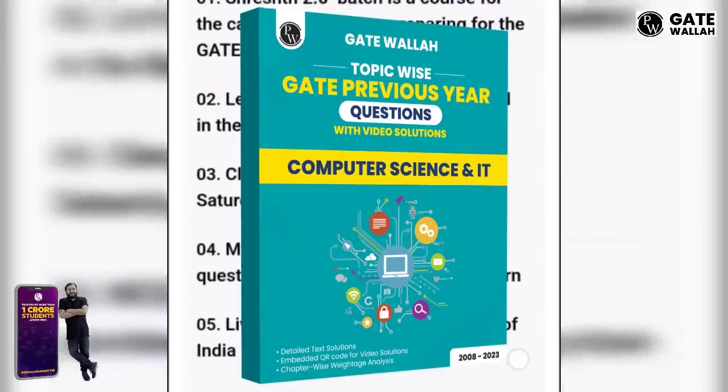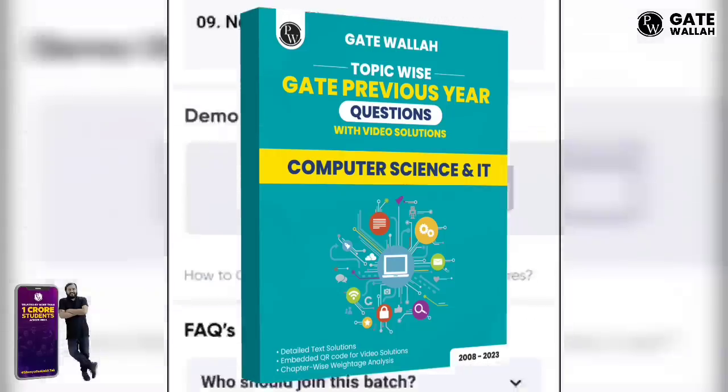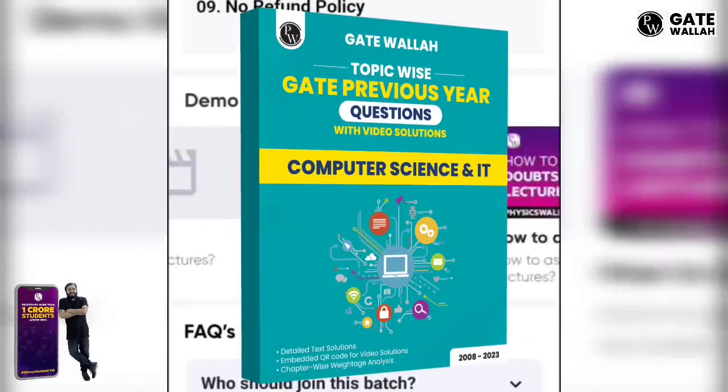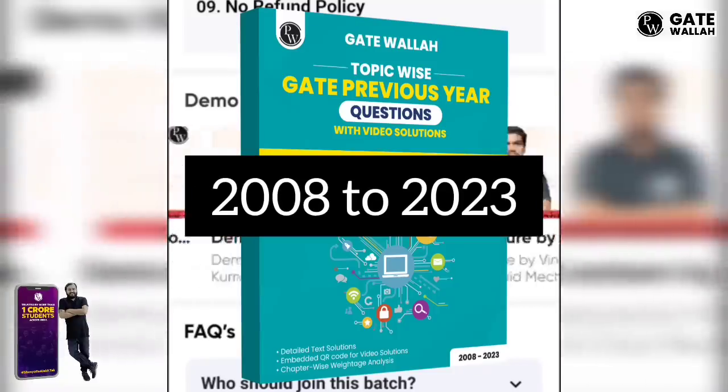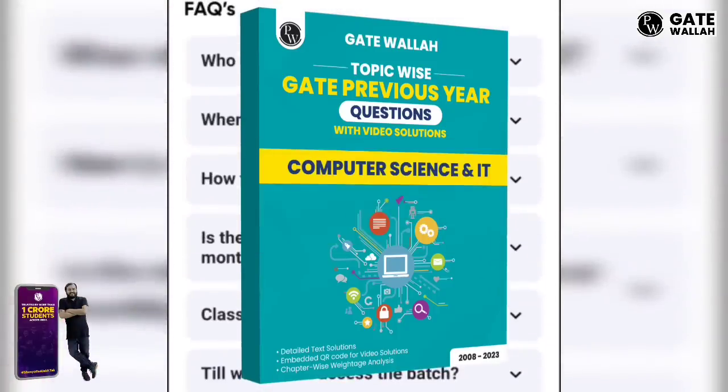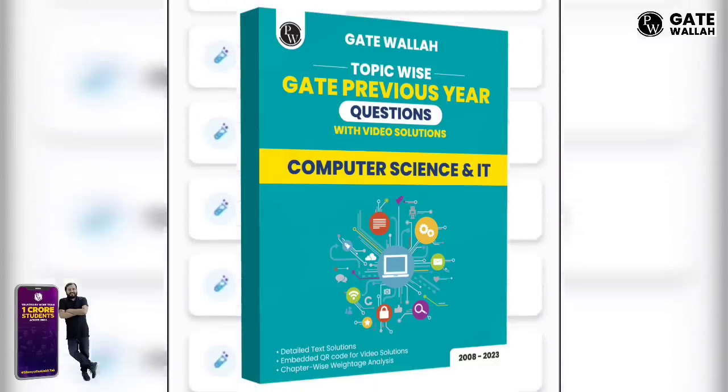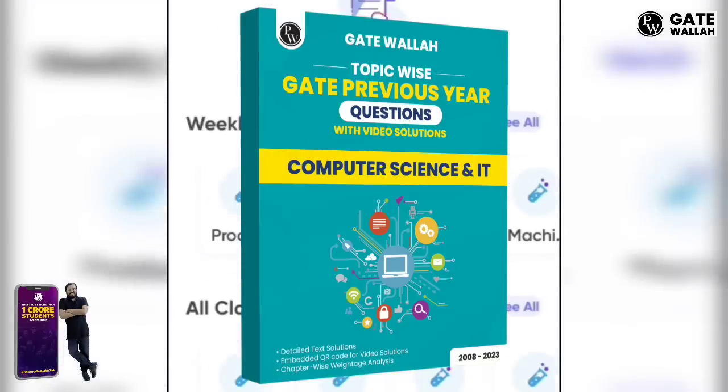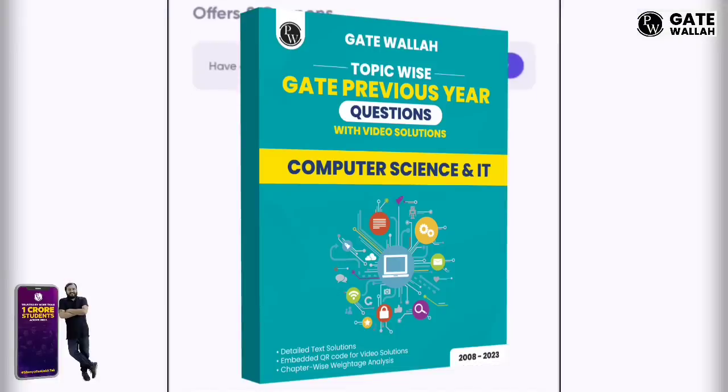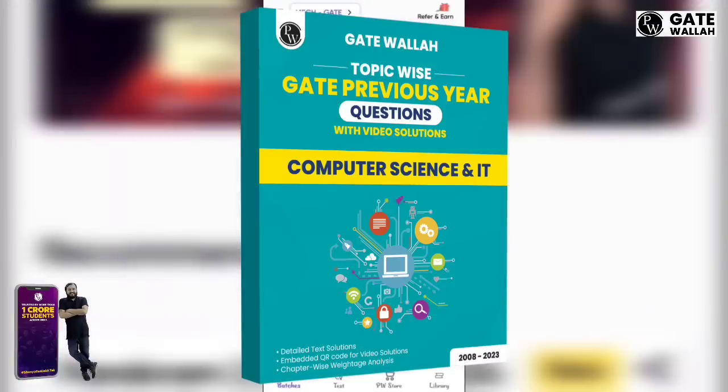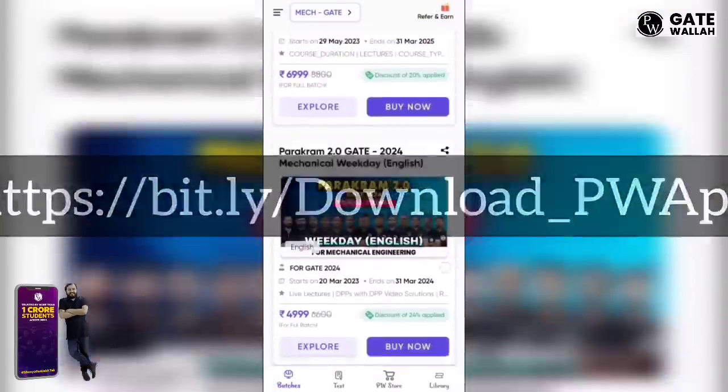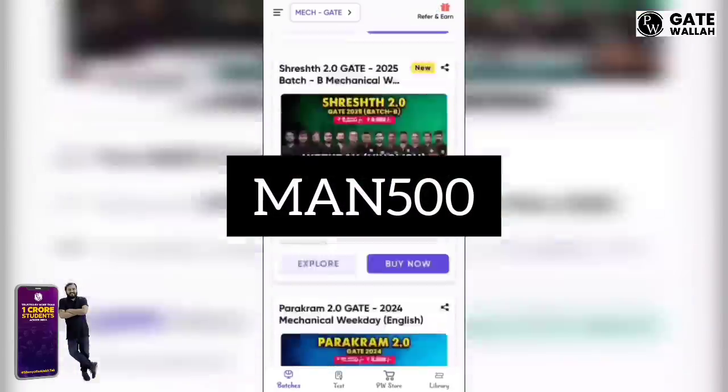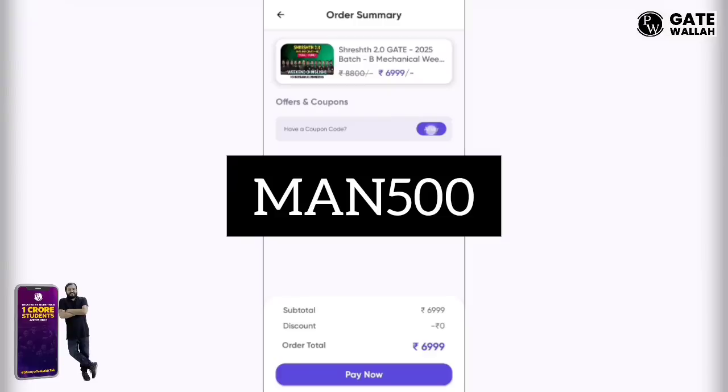You'll get books including Physics Wallah and GATE's topic-wise question papers covering all subjects. This set contains two books: technical and non-technical, covering topic-wise questions from past 16-year question papers from 2008 to 2023 with solutions. It has integrated QR codes to scan for video solutions from expert faculties with detailed chapter-wise analysis. The book costs ₹80-90. Links are in the description. Use my code YUMAN500 to get instant ₹500 discount on your purchase.